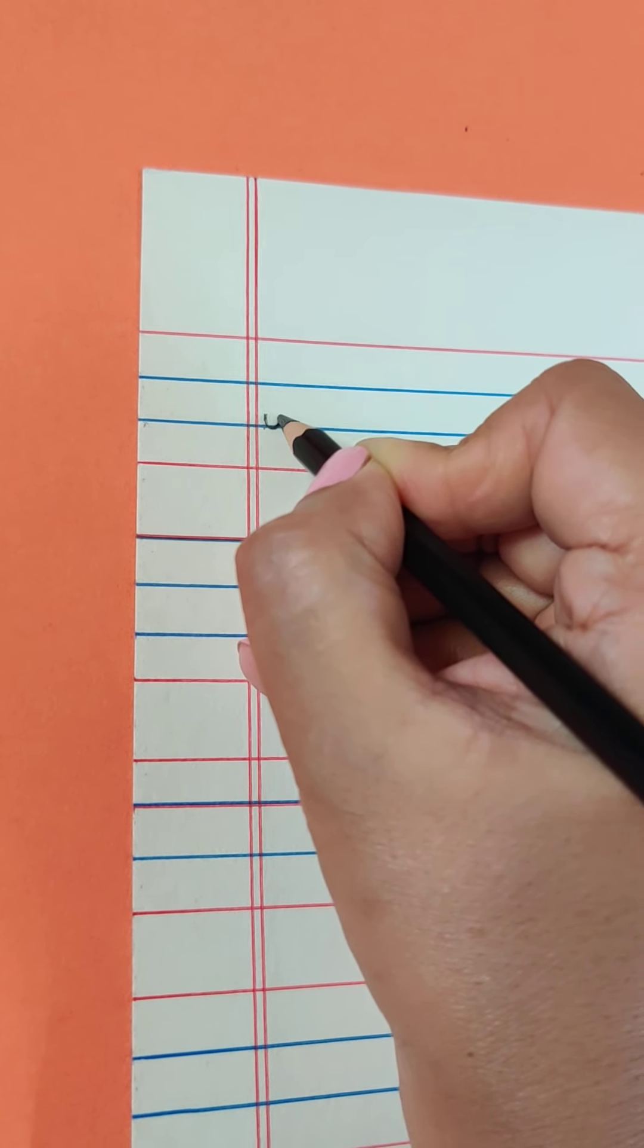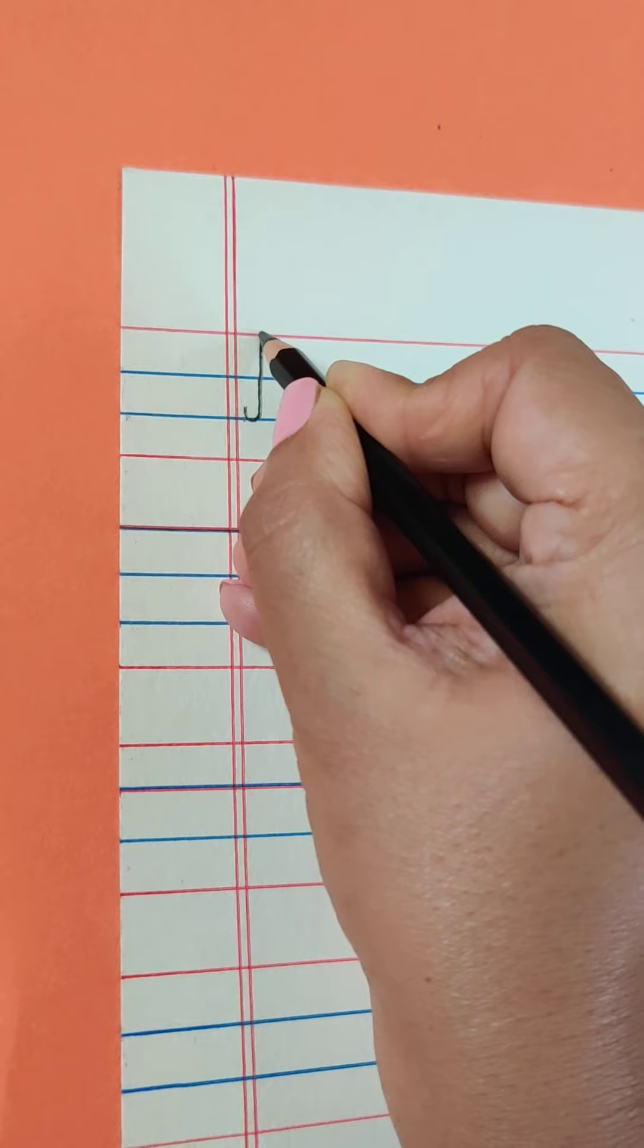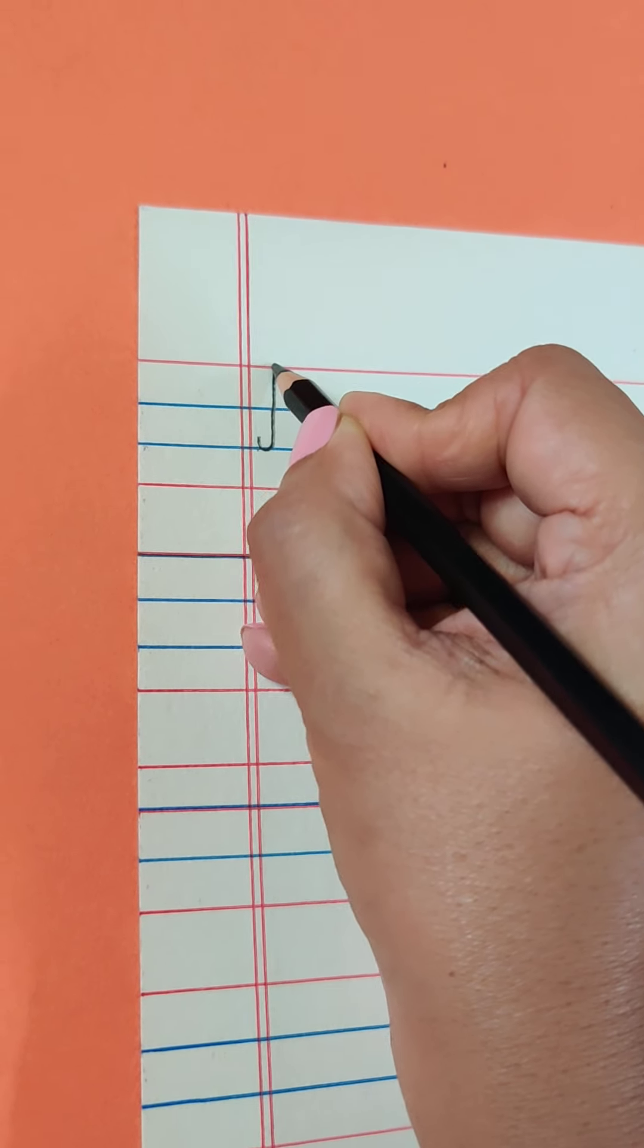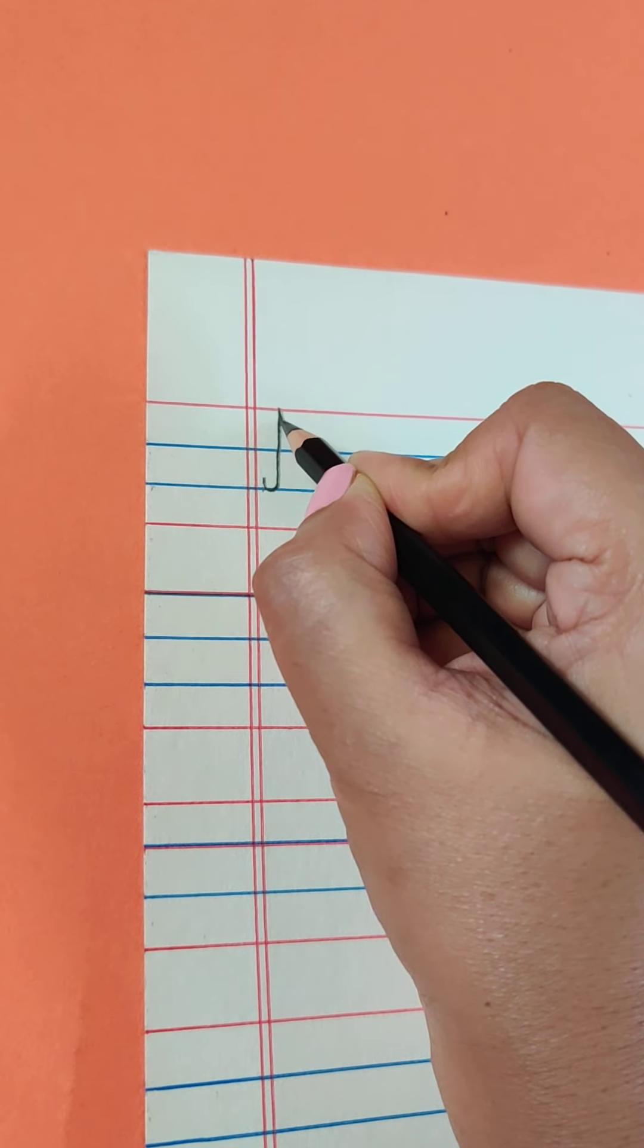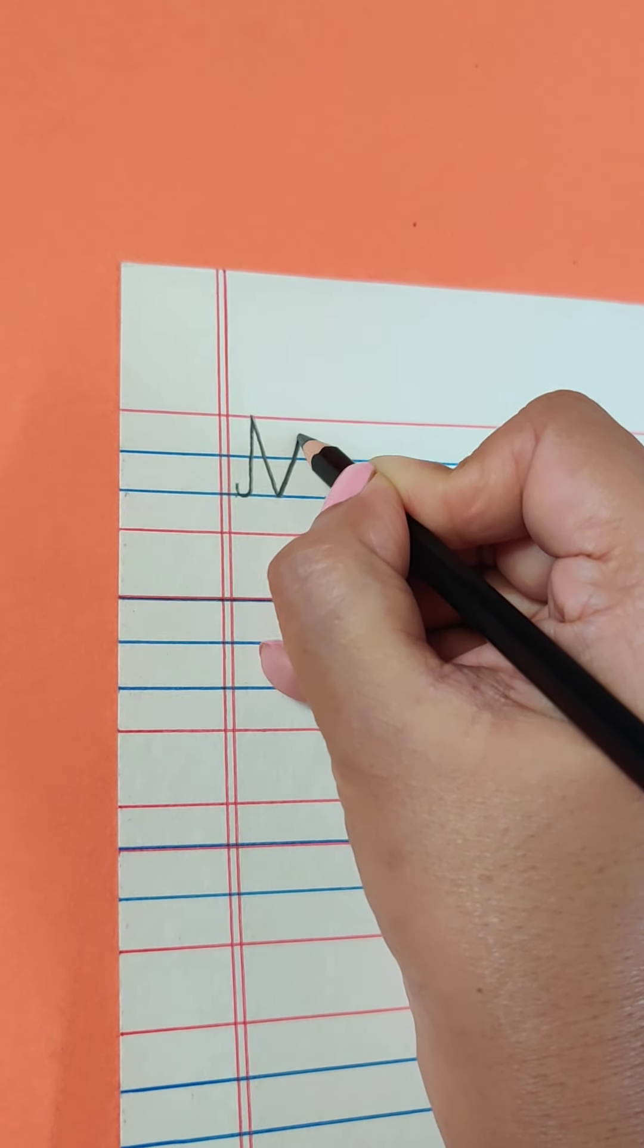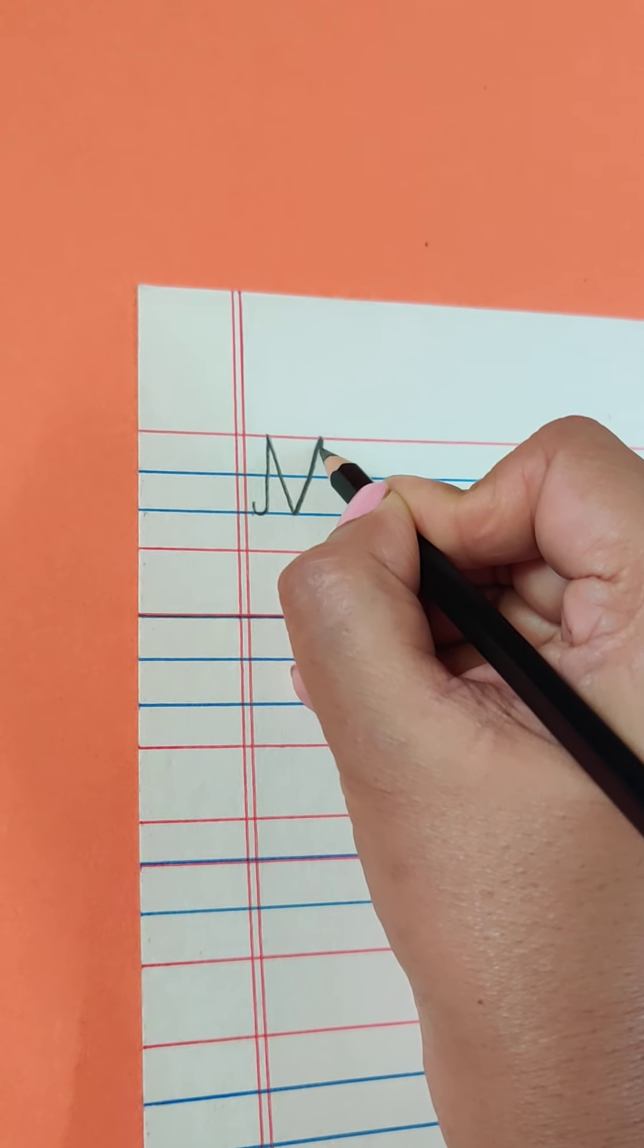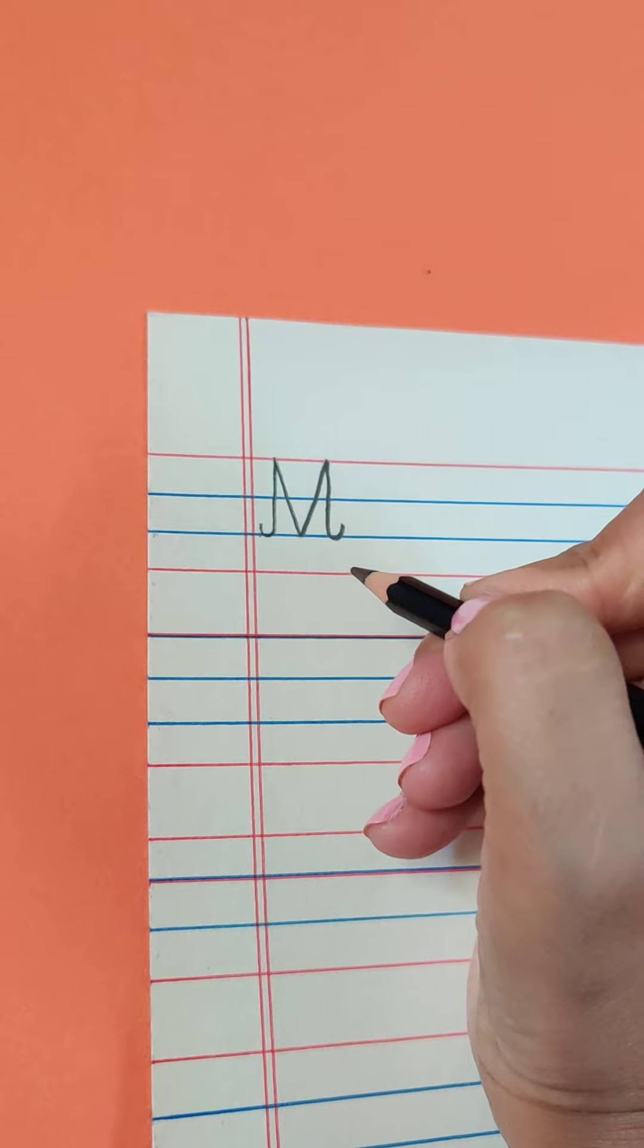Curve, but here we have to go up straight. In A we went slant, but in this we will go straight. And now we will come down slant, again slant, then standing line, touch the blue line and curve.